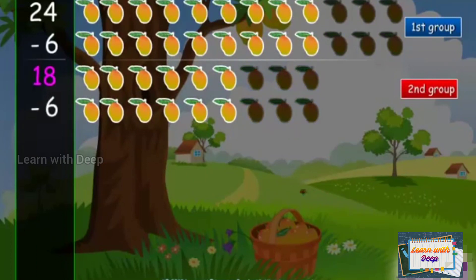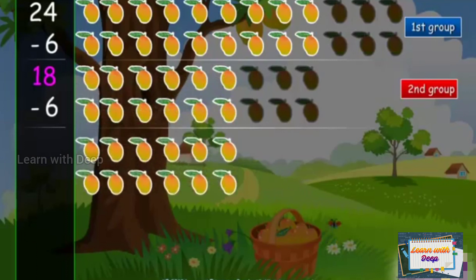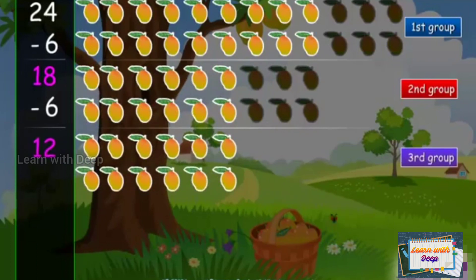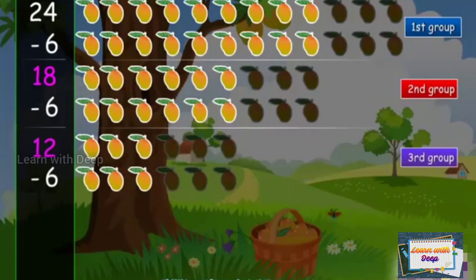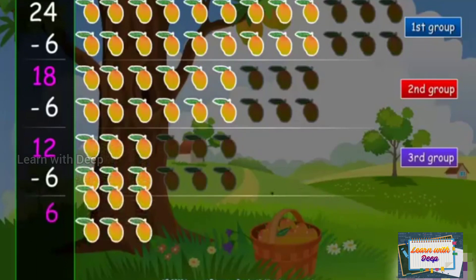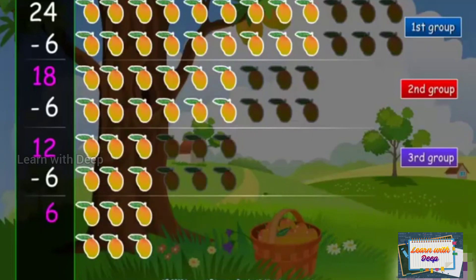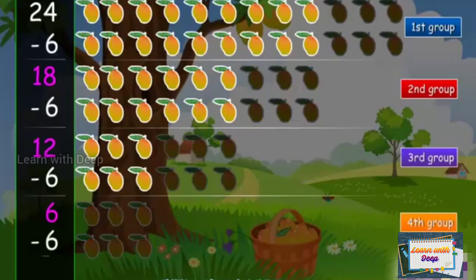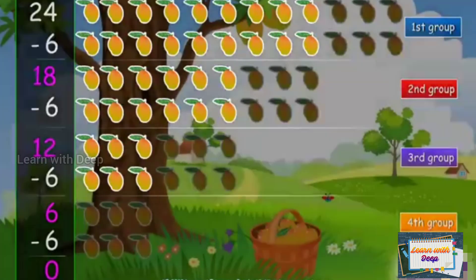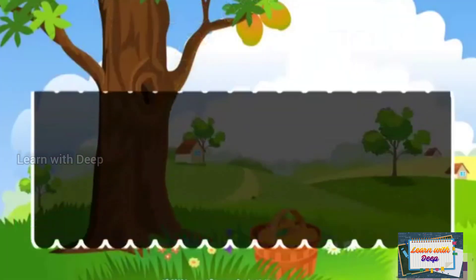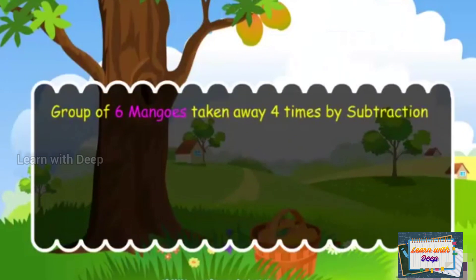Take away the next 6 mangoes. Now 12 mangoes are left. Take 6 more mangoes. Now 6 mangoes are left. When we take away the 4th group we got 0. A group of 6 mangoes was taken away 4 times by subtraction.